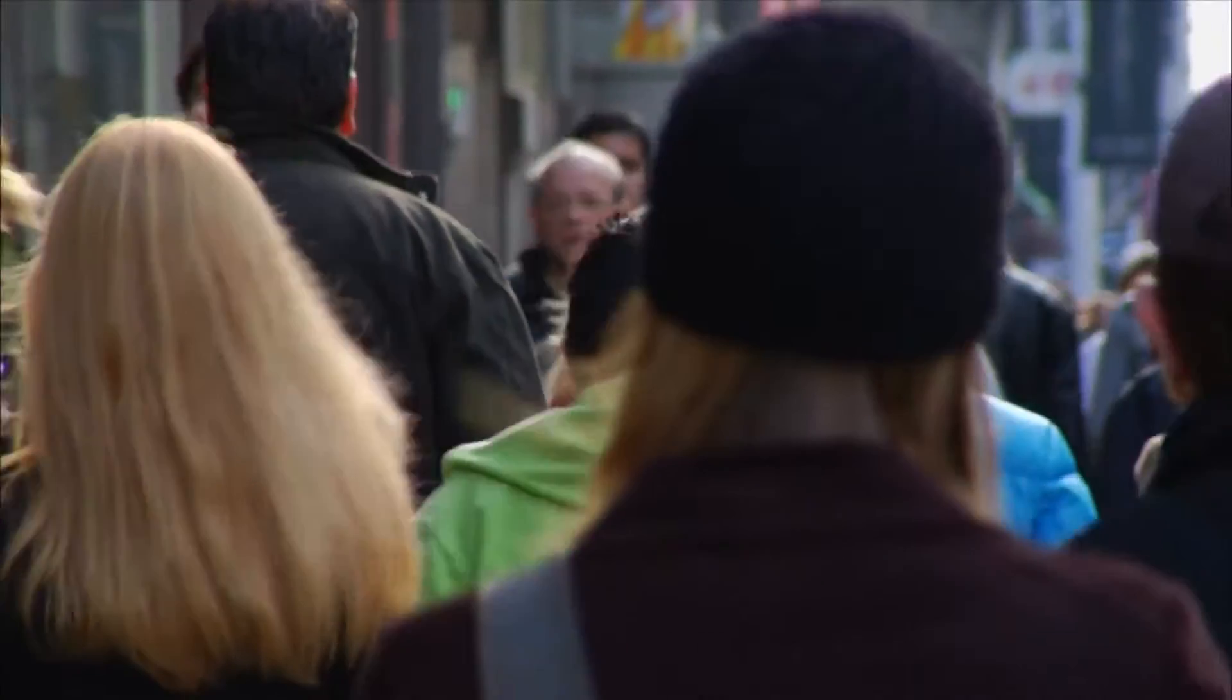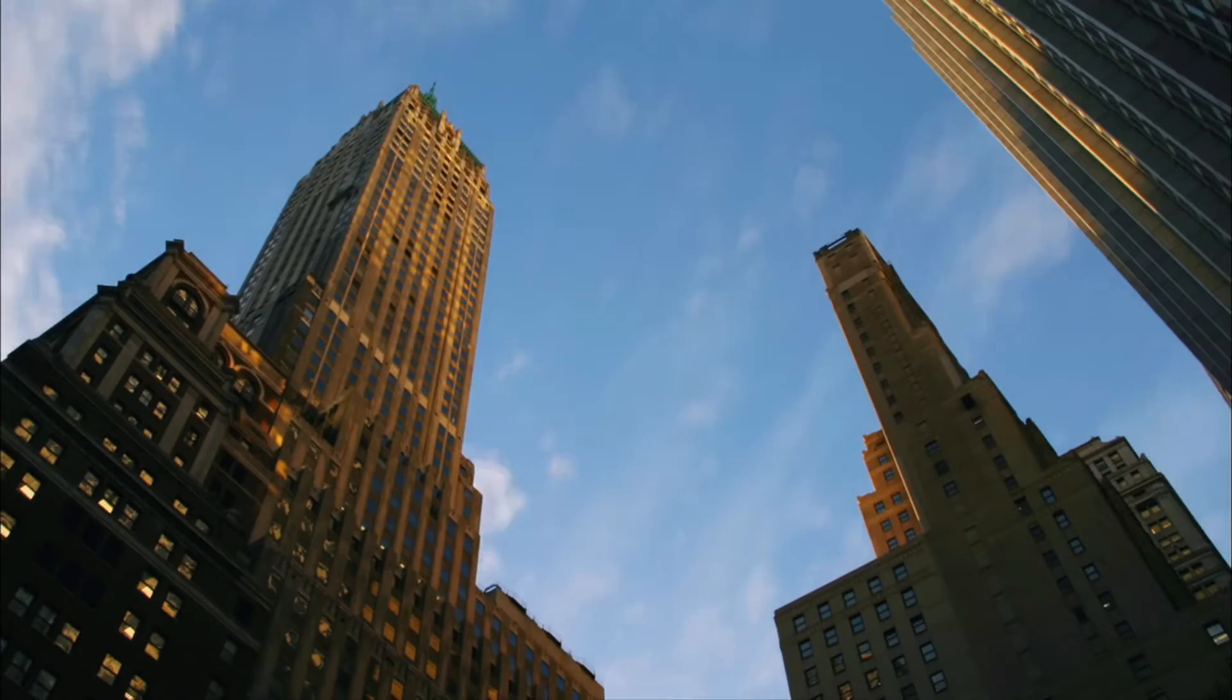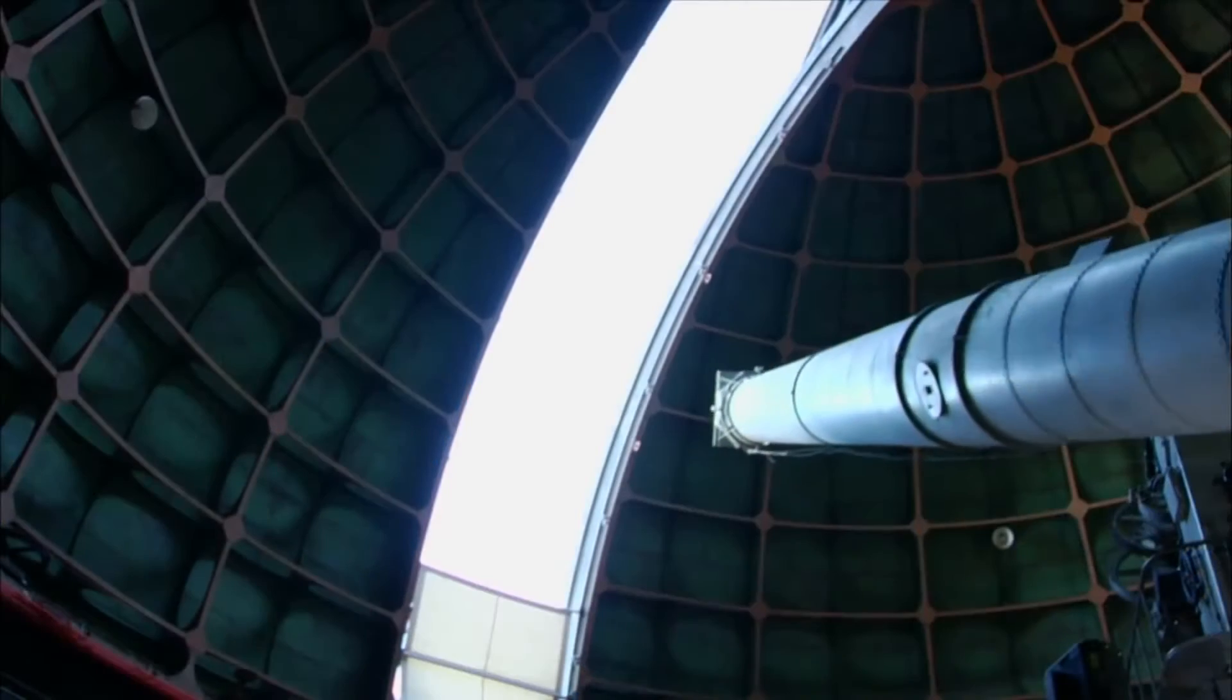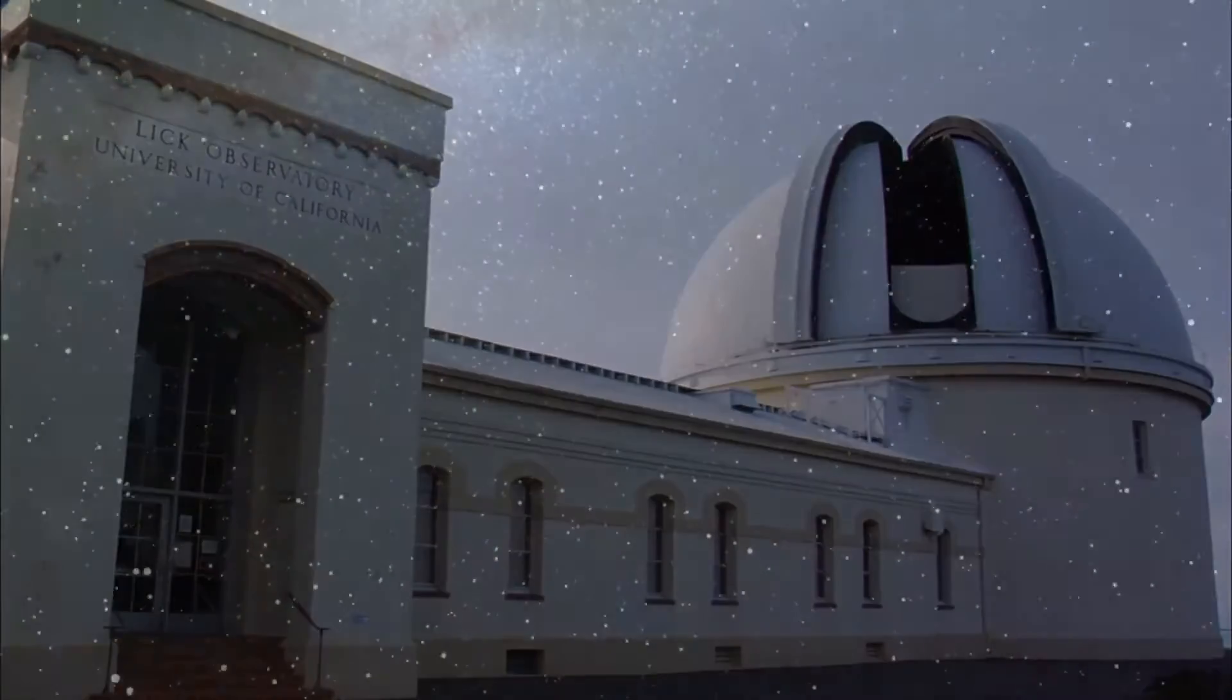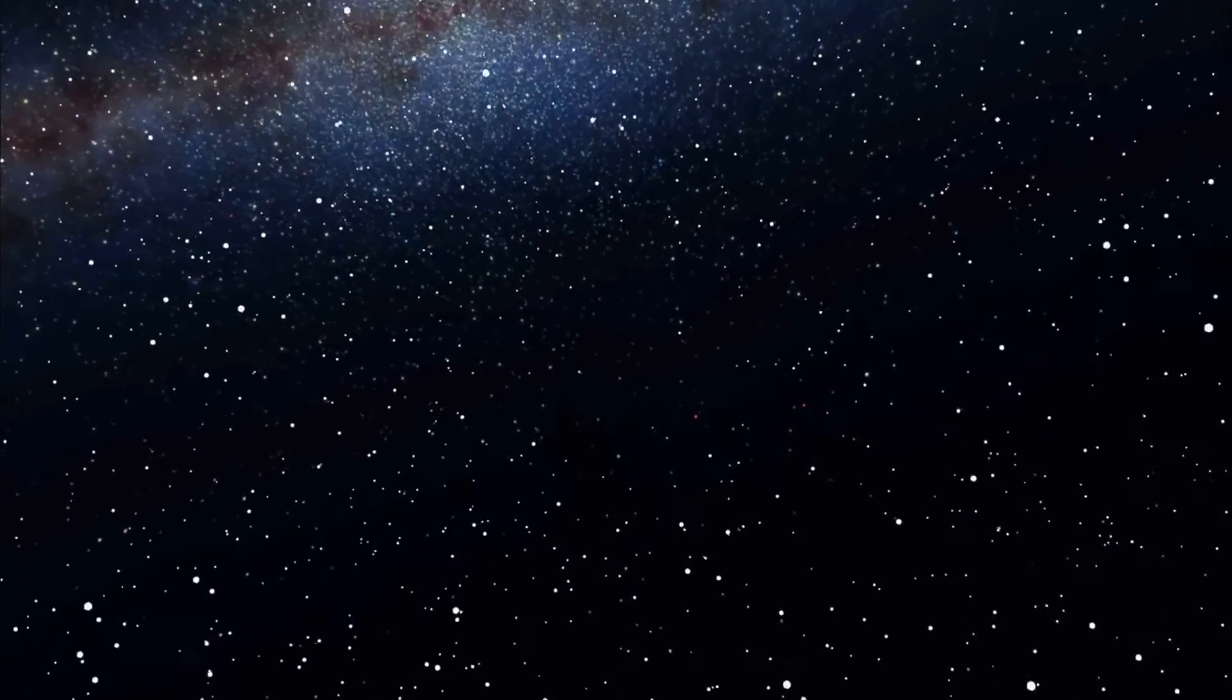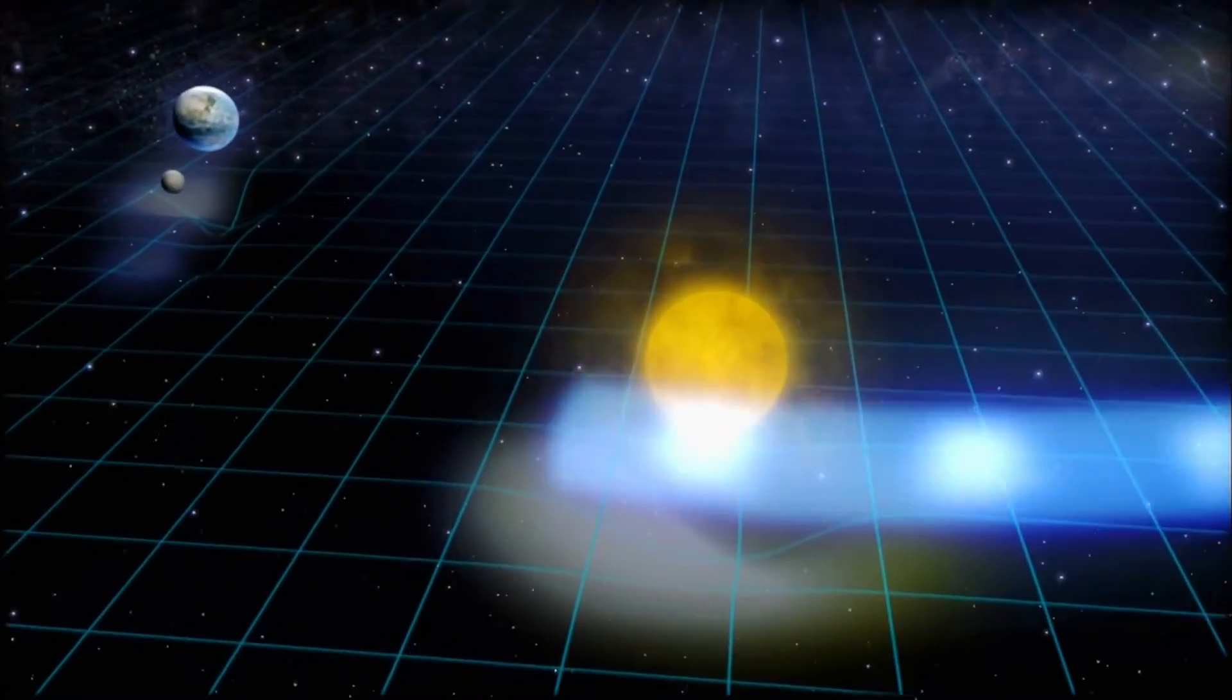For most of us, light seems simple and uncomplicated, a quality of nature by which we see the universe. Under the scrutiny of science, however, it becomes strange and bizarre. Light is such a common thing in our everyday experience, and yet we have very little understanding of it, really. It's very weird. The speed of light is something that the entire universe bends around to accommodate.